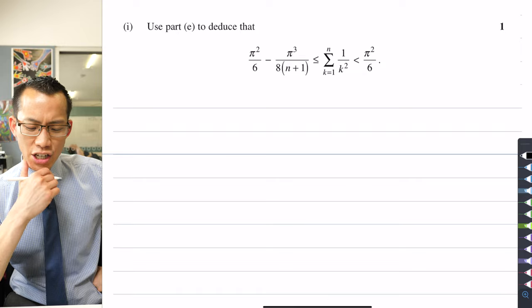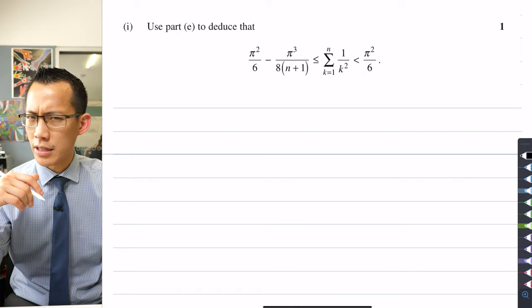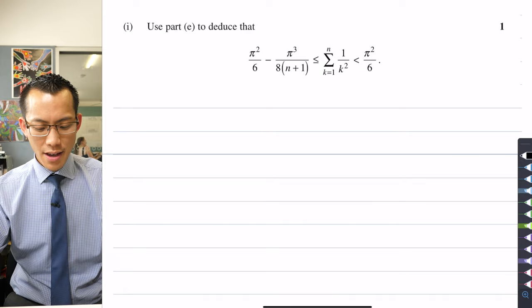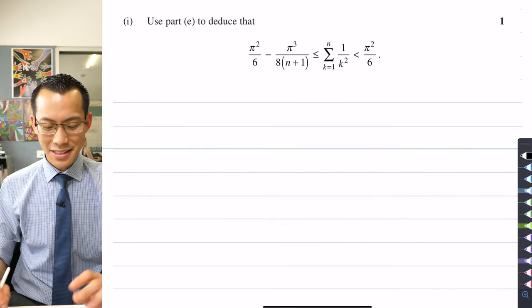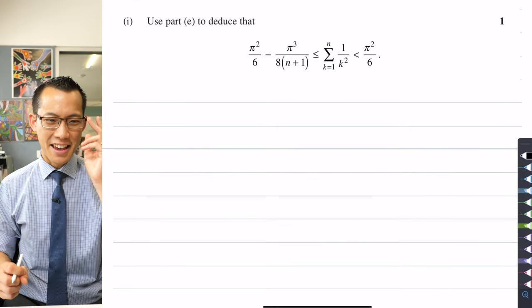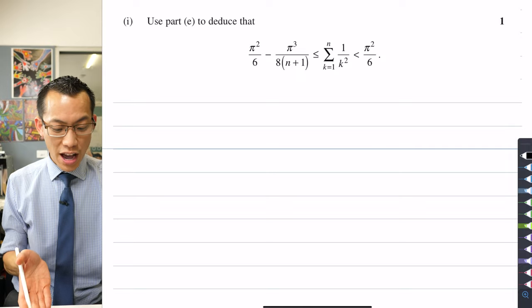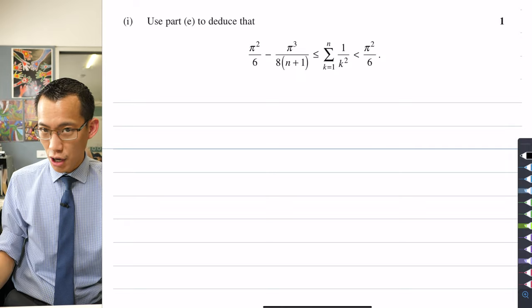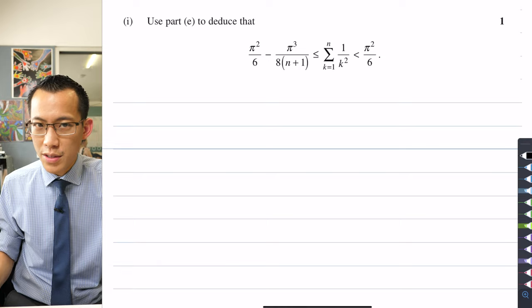Use part E to deduce that this inequality is true. So again, we've got another set of these linked inequalities, and I'm going to have to use this to complete this, tied up in a nice neat bow at the end. What I'm going to do is I'm going to start back at part E. That was so many parts ago, I can't remember what it was about, and they've told me to use it explicitly anyway.